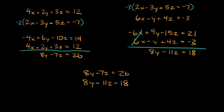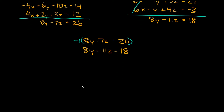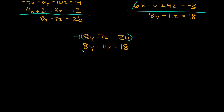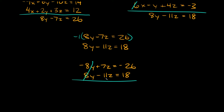Let's multiply the first equation by negative 1. So we get negative 8y plus 7z equals negative 26. The second equation stays the same: 8y minus 11z equals positive 18. Adding these two together, the y terms are eliminated. Positive 7 minus 11 is negative 4, so negative 4z equals negative 8.